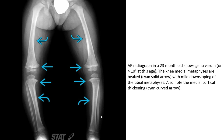This is an AP radiograph in a 23-month-old showing genu varum of more than 10 degrees at this age. The cyan solid arrow indicates mild downsloping of the tibial metaphysis. Also note the medial cortical thickening indicated by the cyan curved arrow.